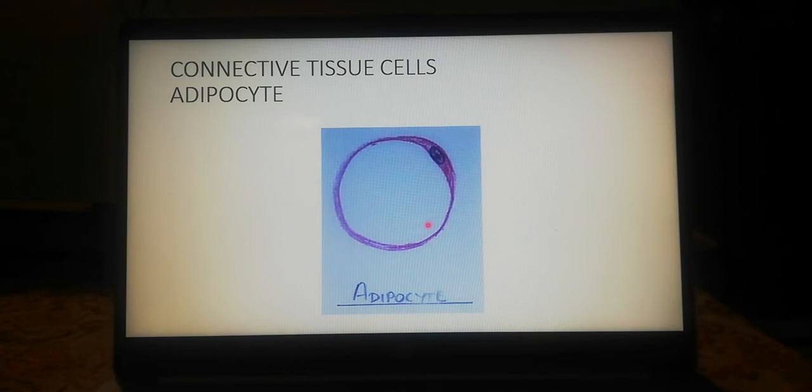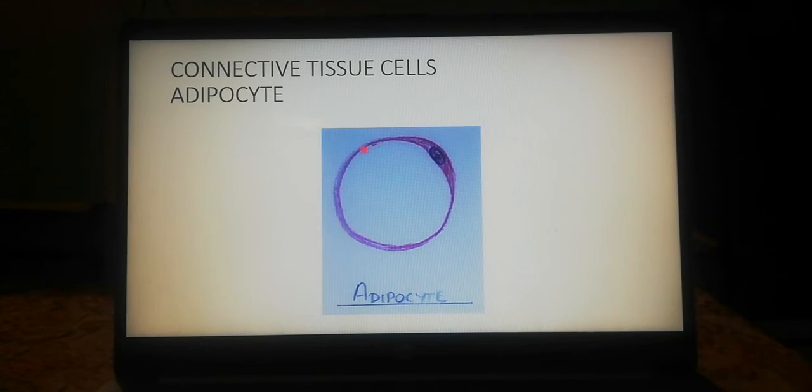The next cell type is the adipocyte, which is a fat-containing cell. About 80% of the cell consists of a fat droplet. This fat droplet pushes the cytoplasm towards the cell membrane, towards the periphery, and the nucleus is also eccentric in position, pressed towards the side due to the large fat droplet. This gives the adipose cell a signet ring appearance. A single adipocyte appears spherical or oval in shape.